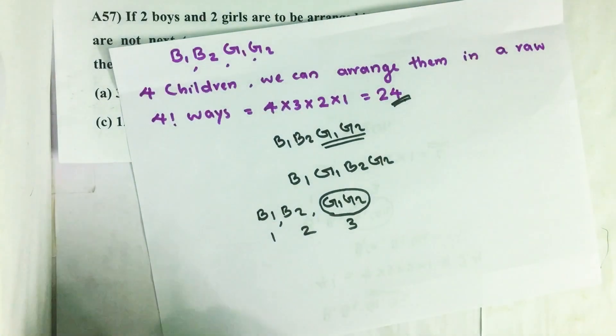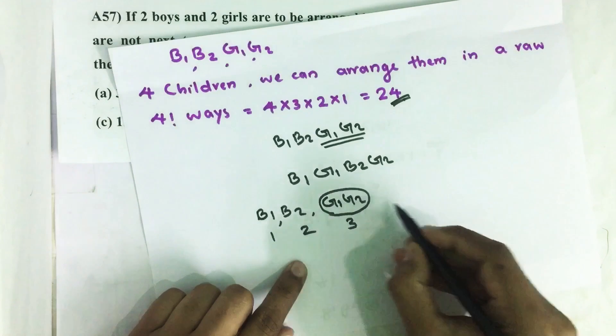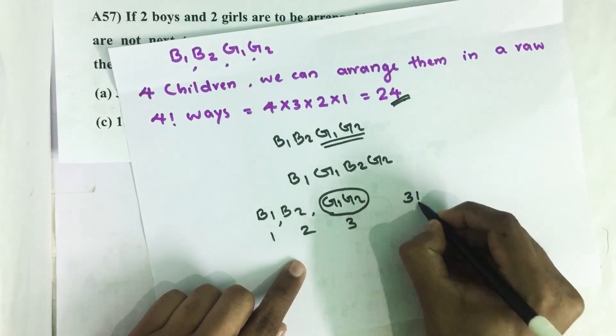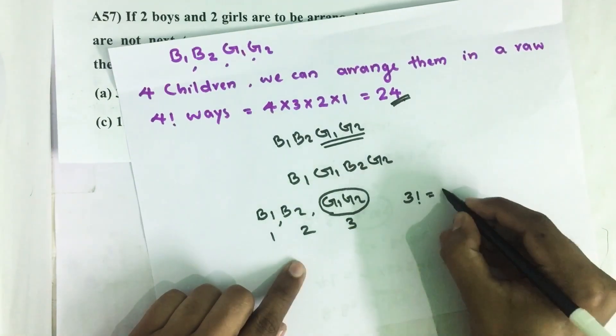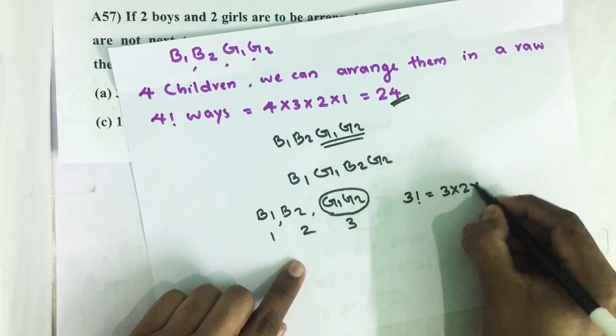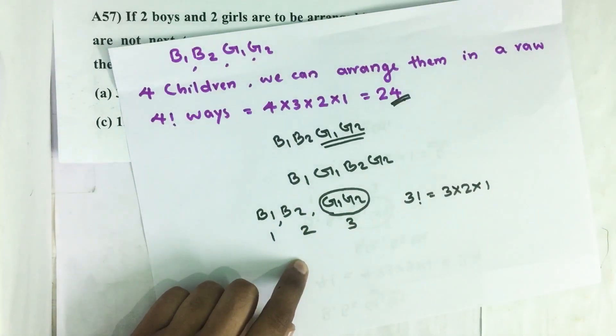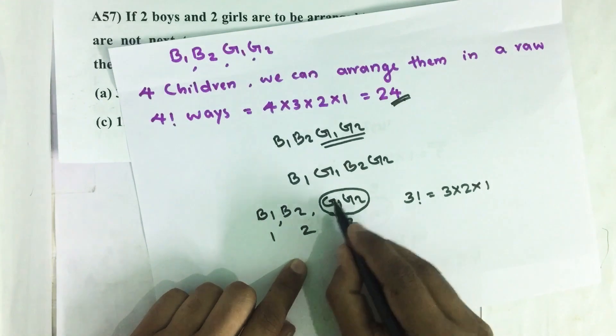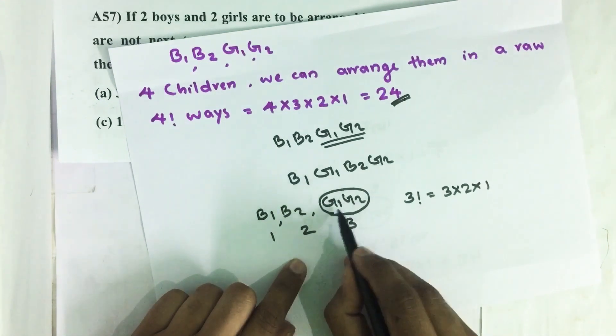So total we have one, two, three, three items. If there are three items we want to arrange them in a row, we can arrange them in 3 factorial ways, which is equal to 3 times 2 times 1.